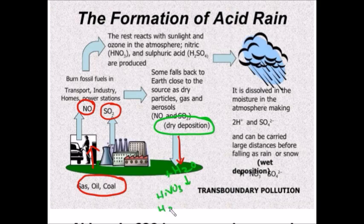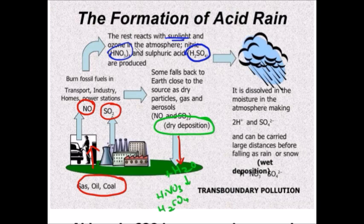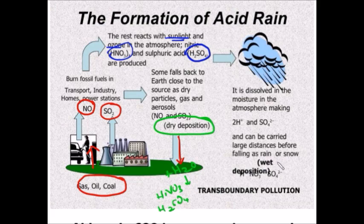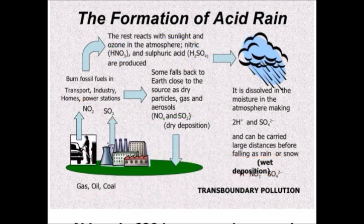The rest of the sulfur dioxide and nitrogen dioxide reacts with sunlight and ozone in the atmosphere and forms nitric acid (HNO3) and sulfuric acid (H2SO4). These sulfuric acid and nitric acid reach the earth's surface as wet deposition. Now you understand the mechanism of dry deposition and wet deposition.